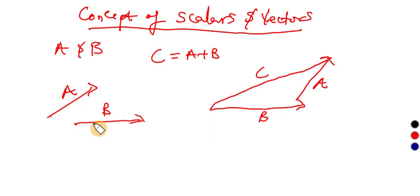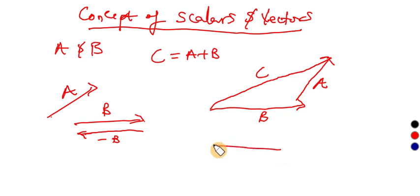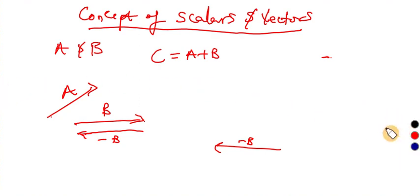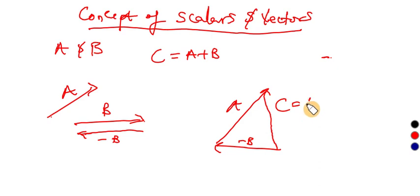Now we can talk about subtraction of vectors. If I change the direction of the arrow, this becomes negative b. To represent subtraction, you place the head of one to the tail of the other — this is a, and this is negative b. So the resultant c is a plus (−b), which equals a minus b. This is how subtraction of two vectors follows from addition of vectors.